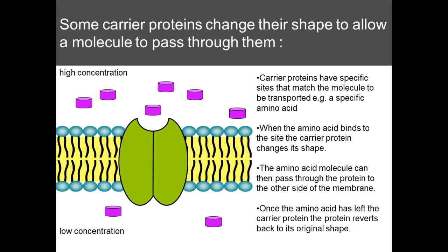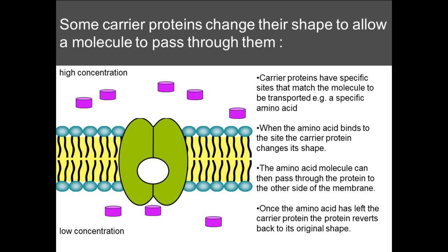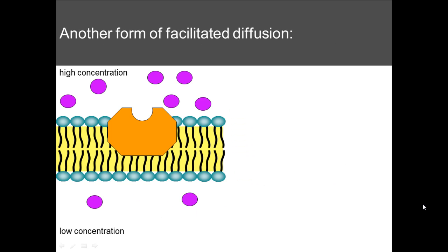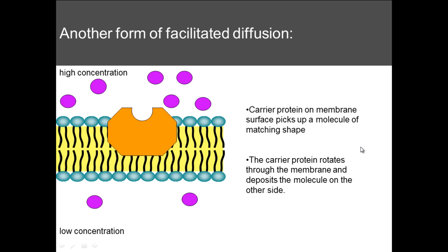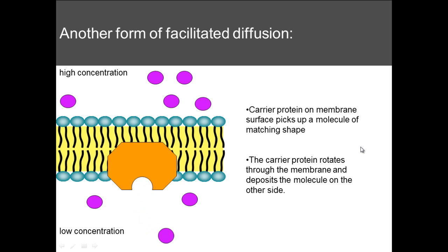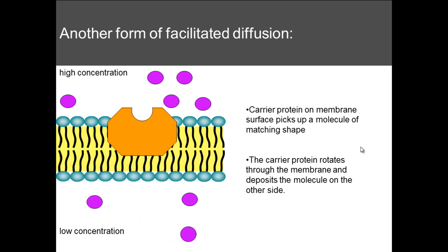In this example, an amino acid binds to the carrier protein, causing the carrier protein to change shape, which enables the amino acid to pass through. The protein then reverts back to its original shape. Another form of facilitated diffusion involves the protein channel physically rotating and moving through the phospholipid bilayer. The molecule binds to the protein, the protein rotates, and carries the molecule through to the other side.